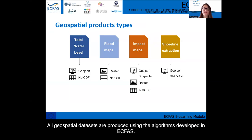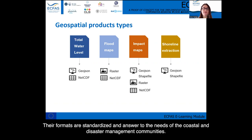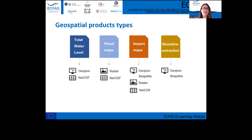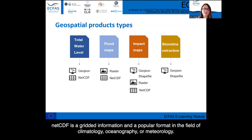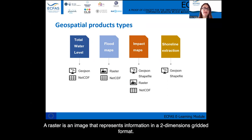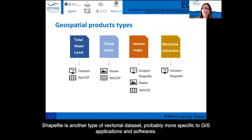All geospatial datasets are produced using the algorithms developed in ECFAS. Their formats are standardized and answer to the needs of the coastal and disaster management communities. GeoJSON is a type of vectorial dataset widely used by GIS users and in web applications. NetCDF is a gridded information format popular in the fields of climatology, oceanography, or meteorology. A raster is an image that represents information in a two-dimensional grid format. And a shapefile is another type of vectorial dataset, more specific to GIS applications and software.